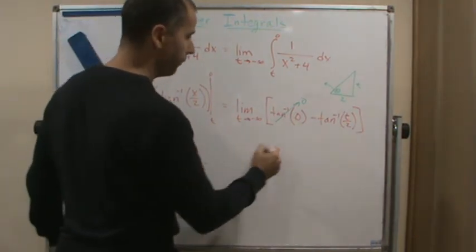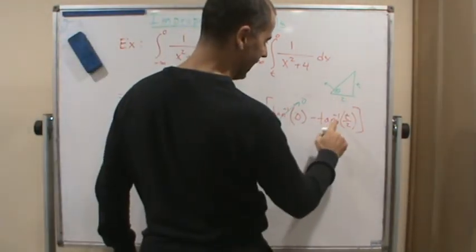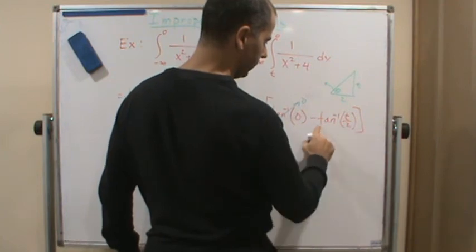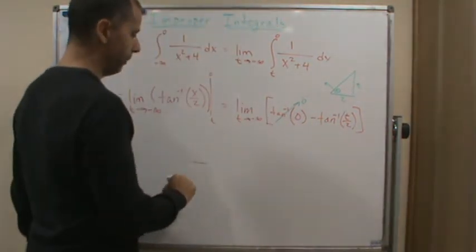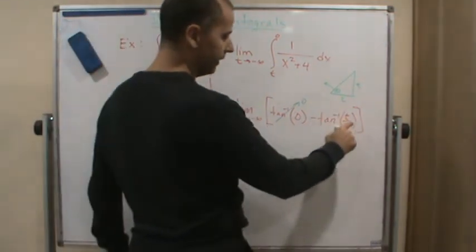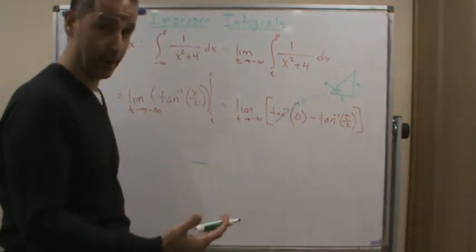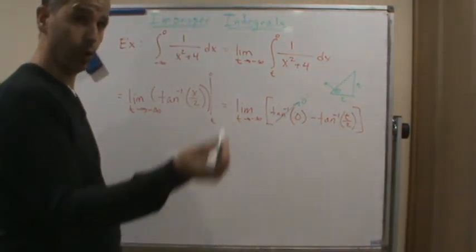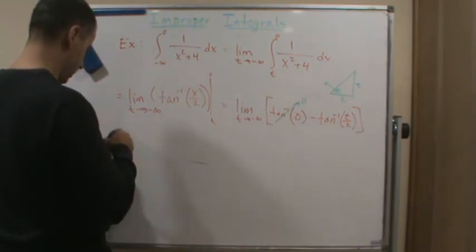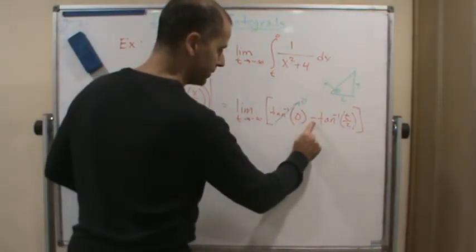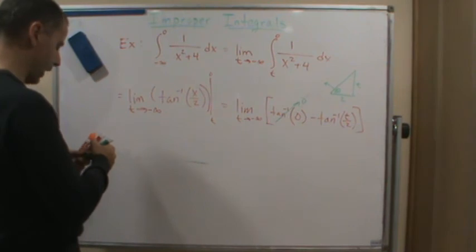Or by the way, since this is negative, since this is going to negative infinity, this is actually going to negative pi over 2. So we're going to negative pi over 2, but we're taking the opposite of that, so we're going to get pi over 2.